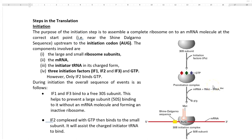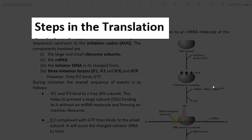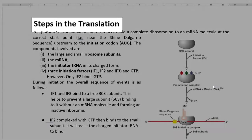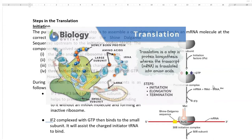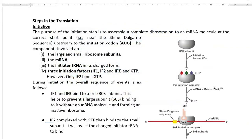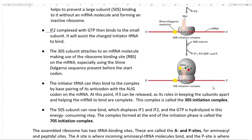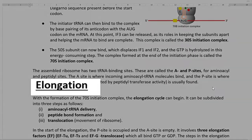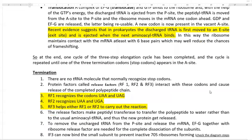In this screencast video lecture, we will look at the steps involved in the translation process. Translation refers to the production of amino acids by using the sequences available in the mRNA. The first step is initiation, the subsequent step is elongation, and the final step is termination of the process.